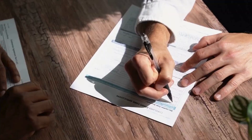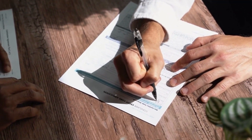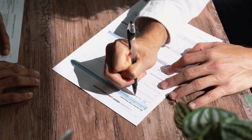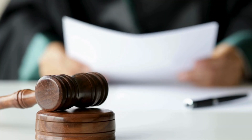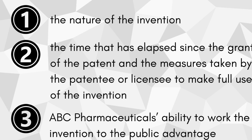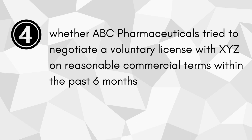When ABC Pharmaceuticals applies for this license, as per section 84.6, the controller of patents assesses a few essential factors such as the nature of the invention, the time that has elapsed since the grant of the patent, the measures already taken by the patentee or any licensee to make full use of the invention, ABC Pharmaceuticals' ability to work the invention to the public advantage, and whether ABC Pharmaceuticals tried to negotiate a voluntary license with XYZ on reasonable commercial terms within the past six months.